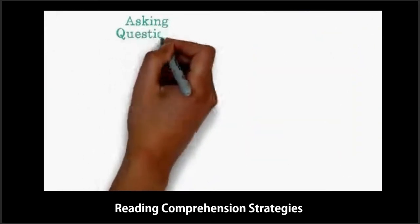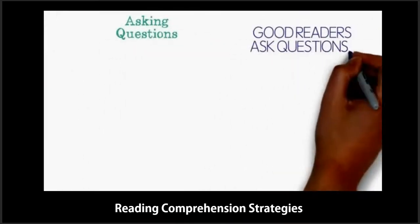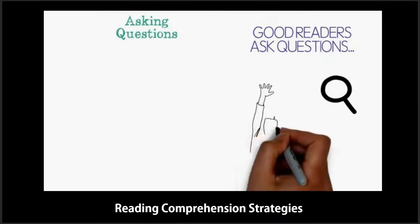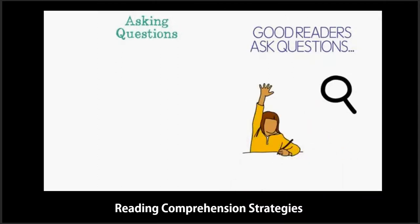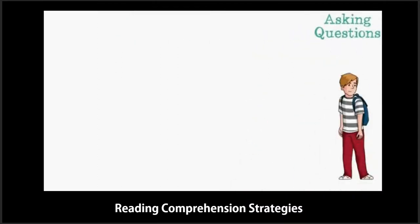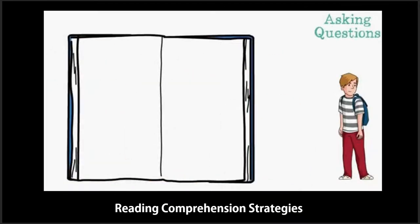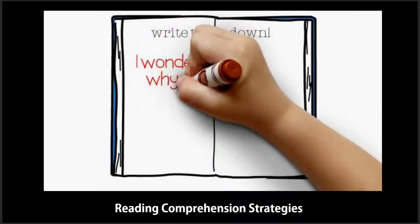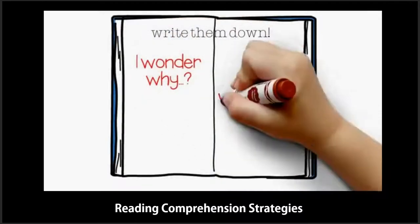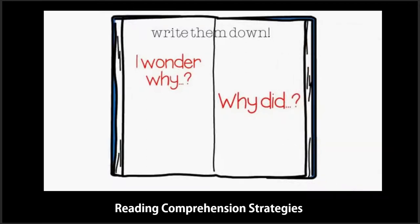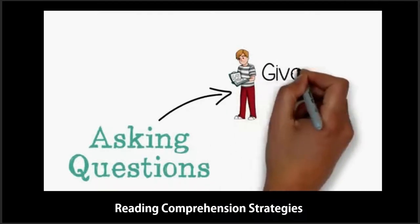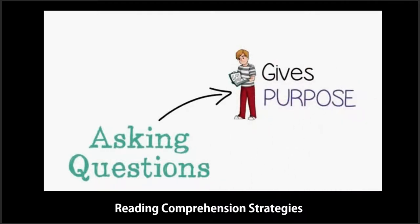Good readers ask lots of questions while they are reading. Sometimes the questions come up because they don't understand something mentioned in a story. Sometimes a question occurs because a trigger in the book peaks a reader's curiosity. When reading with a student, it is a good idea to encourage the student to write down any questions that occur in a journal or reader's notebook. Examples of questions may include: I wonder why the wolf wanted to get into the pigs' houses? Why did some of the pigs buy straw and wood instead of bricks? What does the word huffed mean? Asking questions while reading promotes reading comprehension because it gives a purpose for reading the book and can make reading much more interesting.